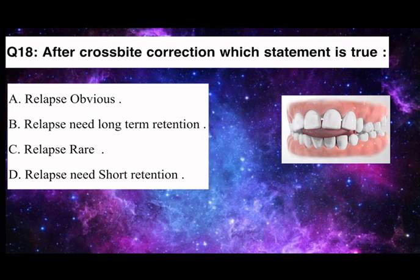Q18. After crossbite correction, which statement is true? A. Relapse obvious. B. Relapse needs long-term retention. C. Relapse rare. D. Relapse needs short retention.